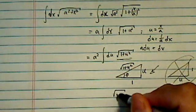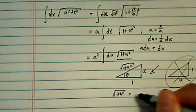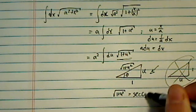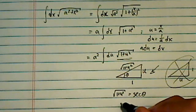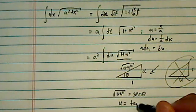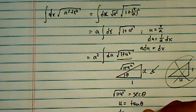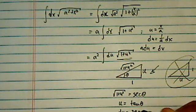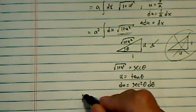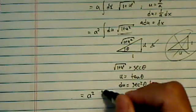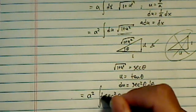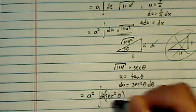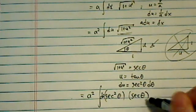I have radical root of one plus u squared is equal to secant theta. And then I need to find out u is equal to tangent theta. So du is equal to secant squared d theta. Let's go back there. So I have a squared, du is secant squared theta, let's put a d theta over there, and then I have a secant theta.